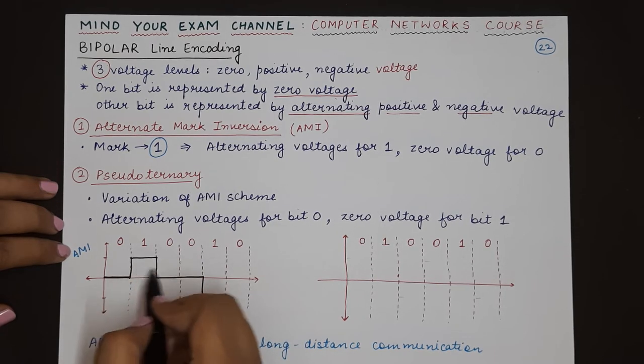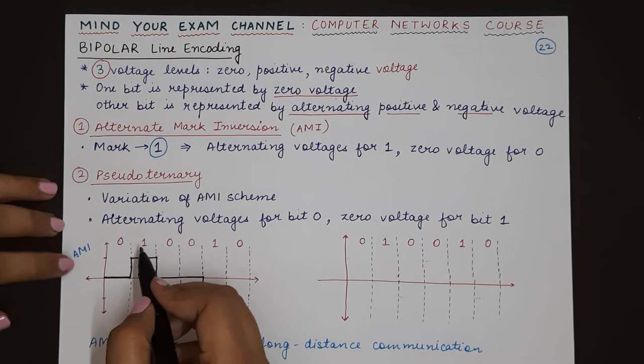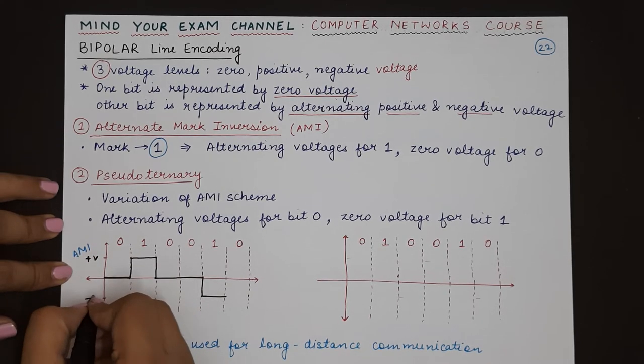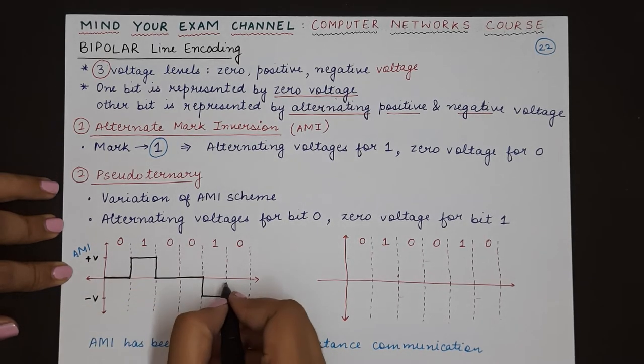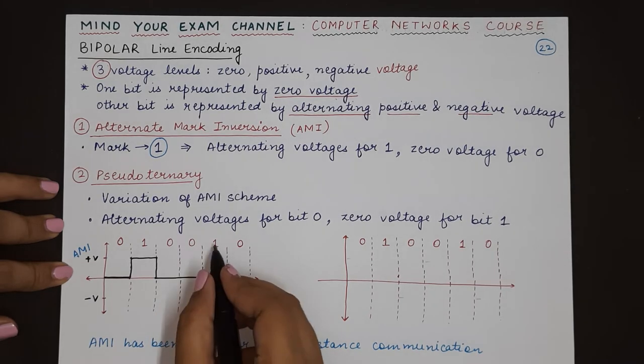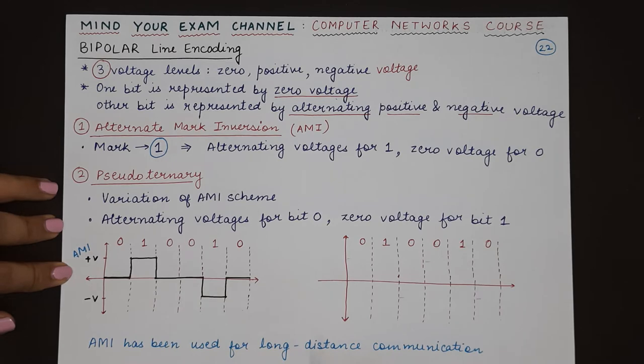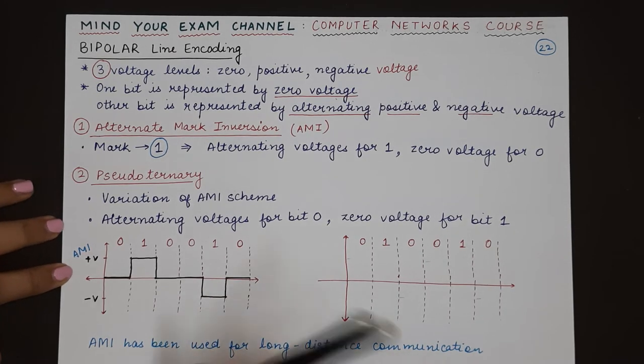we have a one. Previously, the one was represented as positive V. Now, it will be represented as minus V. So here, we represent one as negative voltage, and for zero, again we come to zero voltage.